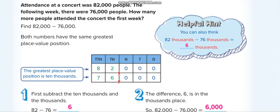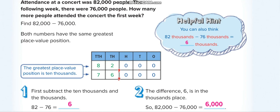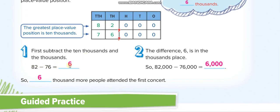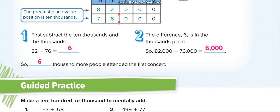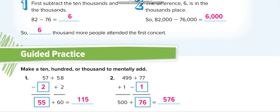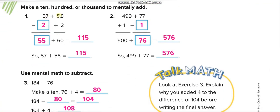Next: 82,000 minus 76,000. Simply remove the three zeros and keep them aside. Then 82 minus 76 equals 6. Put the three zeros back and you get 6,000. So 6,000 more people attended the first concert.